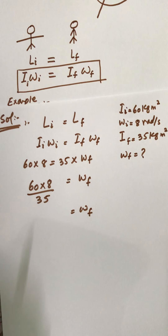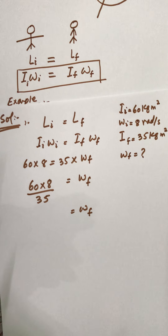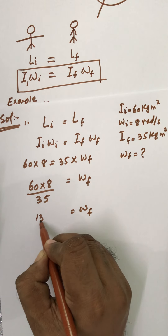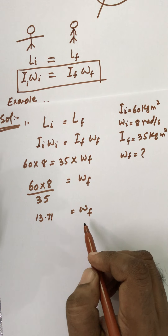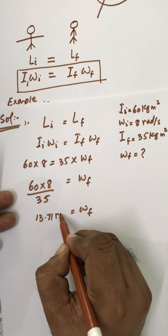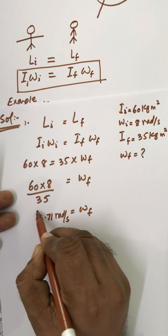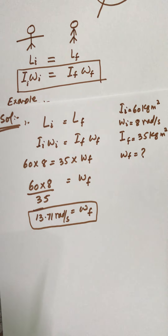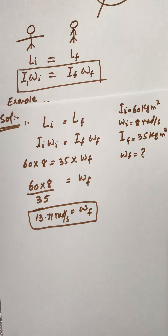Using a calculator: 60 multiplied by 8 divided by 35 gives 13.71 radians per second. Don't forget to write the unit, which is radians per second. So this is how we apply the law of conservation of angular momentum.